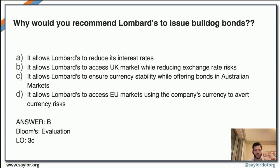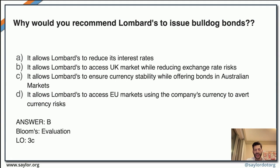The next question asks why you would recommend issuing bulldog bonds for Lombard's. Recall unit three on bond types — international bonds, foreign bonds. Bulldog bonds are bonds issued in the UK by a non-UK organization, denominated in pound sterling, and directed to British investors. Because of this, answer B is the most accurate answer.